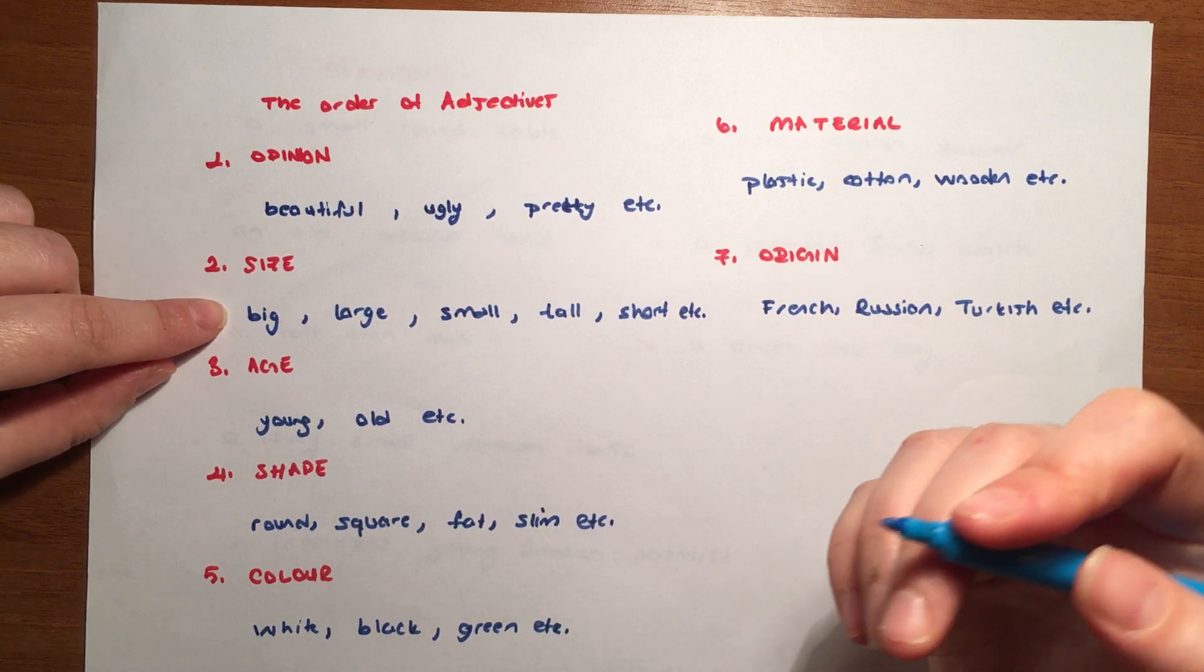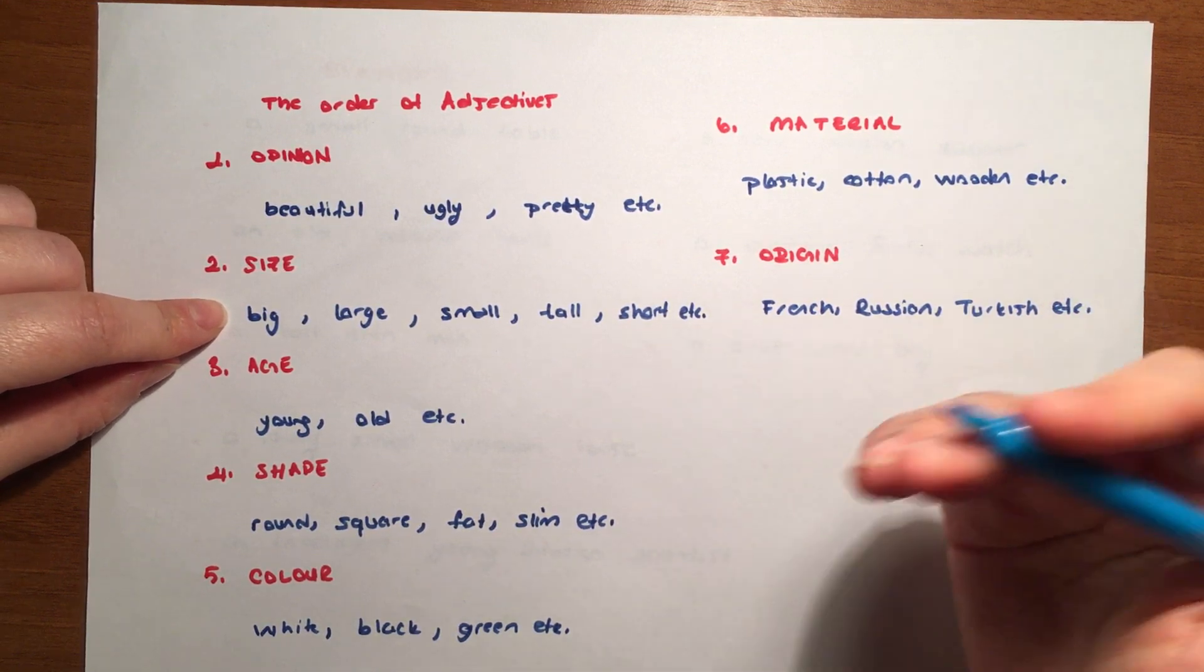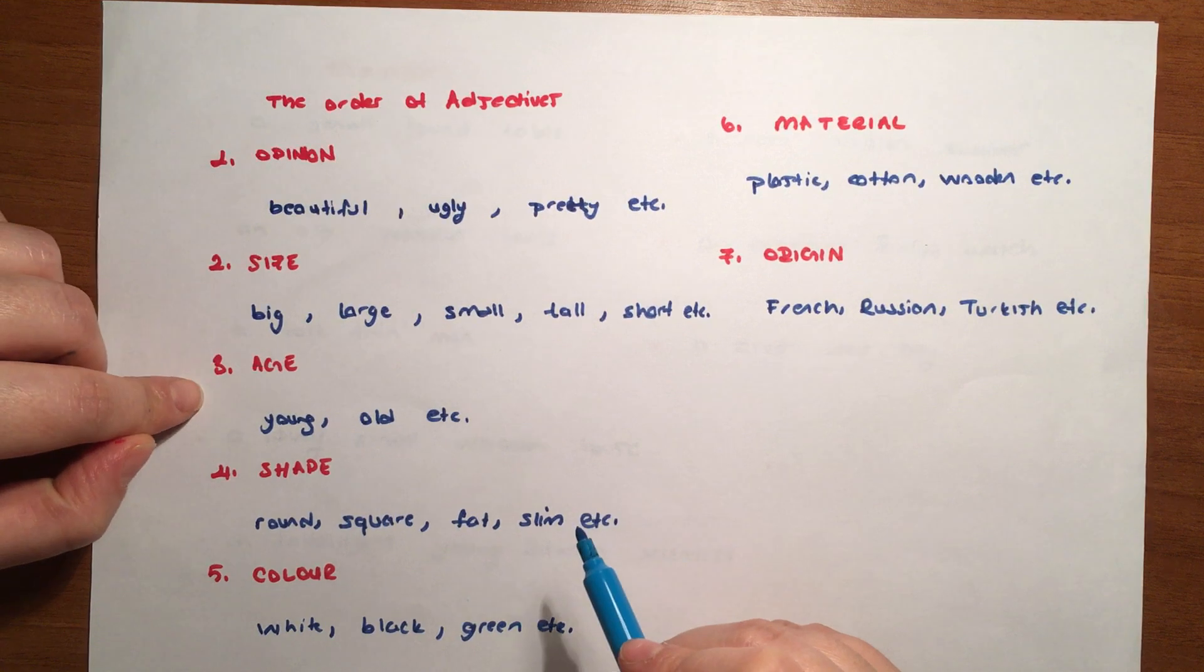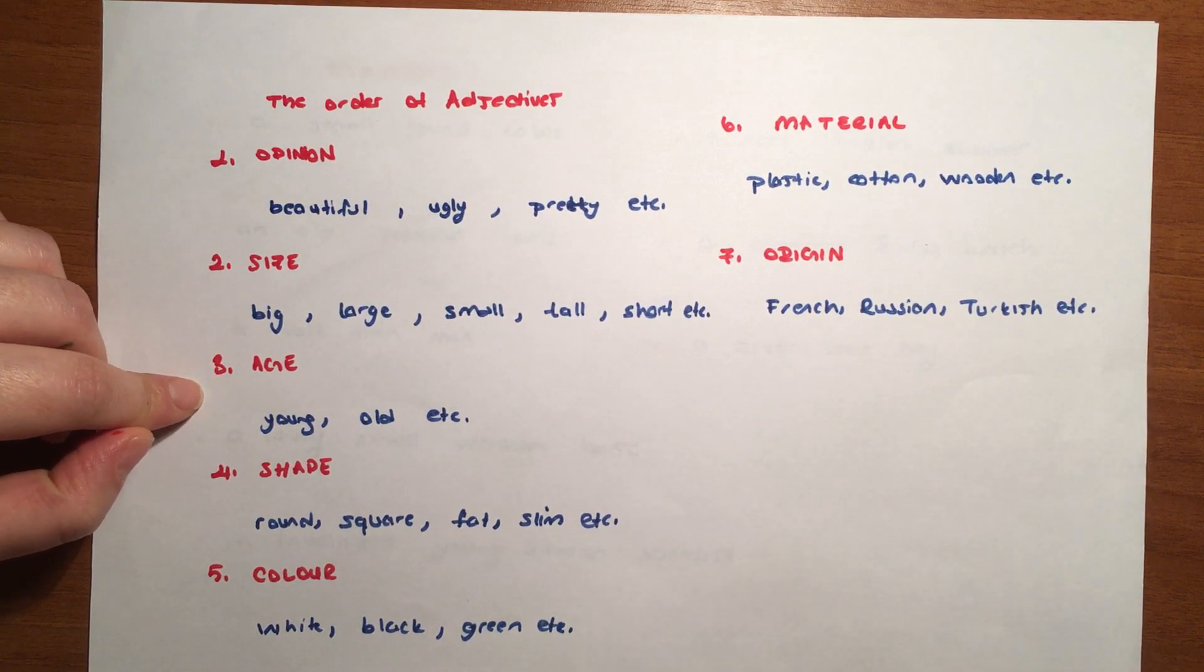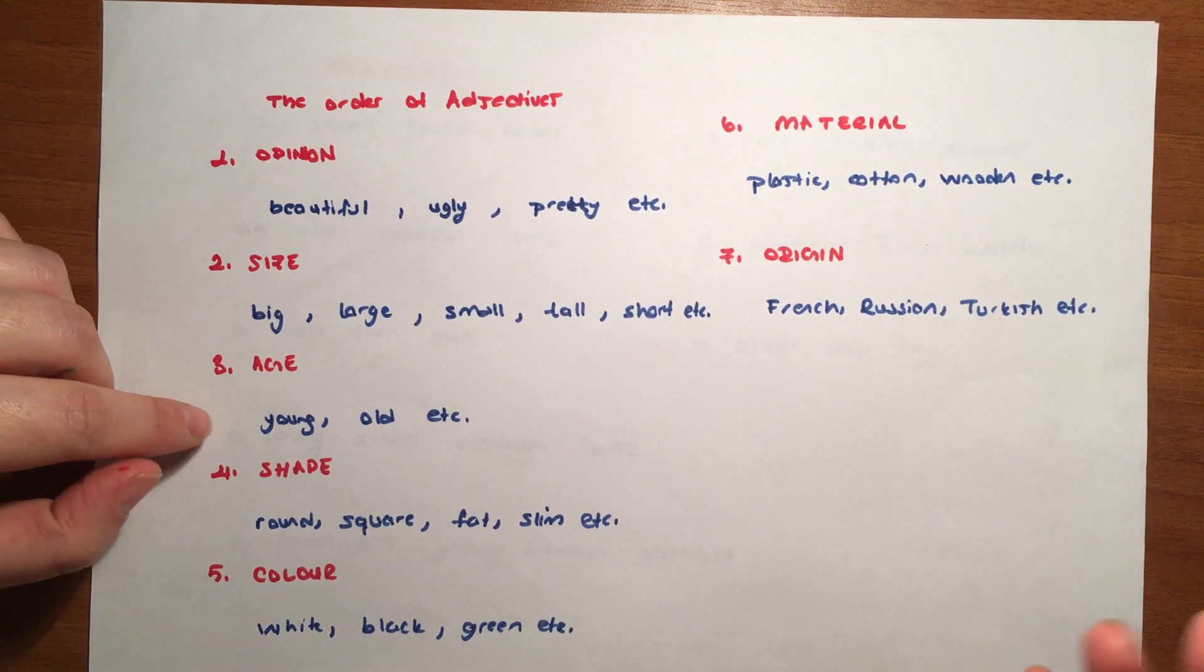Size - what can you use in terms of size? Big, large, small, tall, short, and etc. Age - young, old, new, you can say. Shape - round, square, fat, slim, long, tall, you can say what you want.